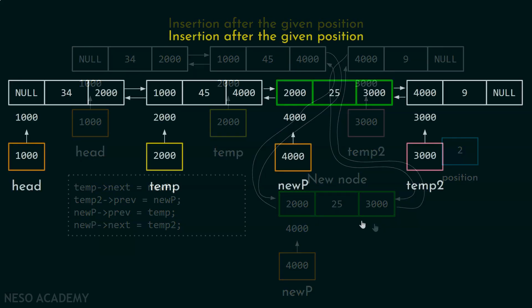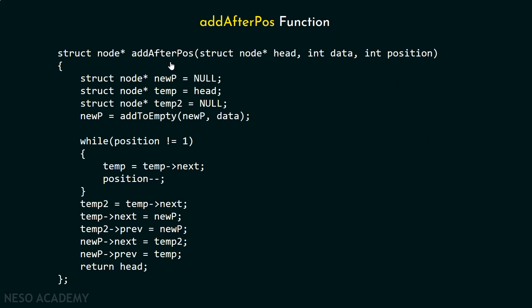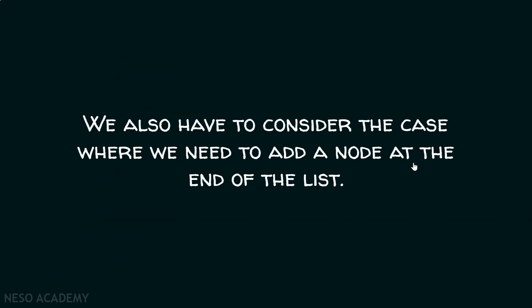And that's it. You can see the resultant linked list obtained. This is the final function which helps us in adding a node after the given position, named add_after_pos. This function receives the head pointer, data, and position. Three pointers are declared: new p, temp, and temp2. The add_to_empty function is called to create a new node, passing new p and data. However, this function is not capable of handling the addition of a node at the end of the list, so we have to consider that case separately.